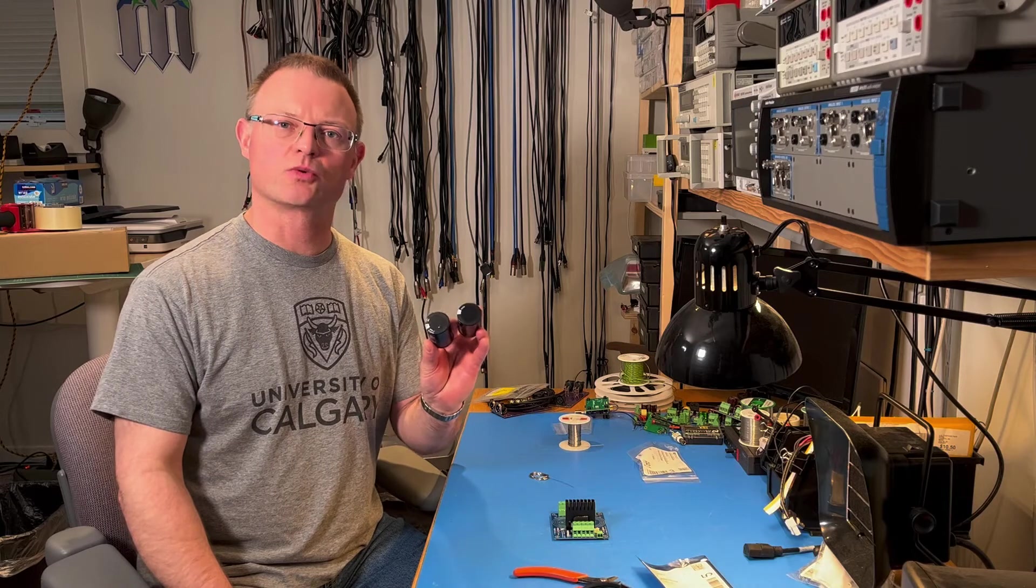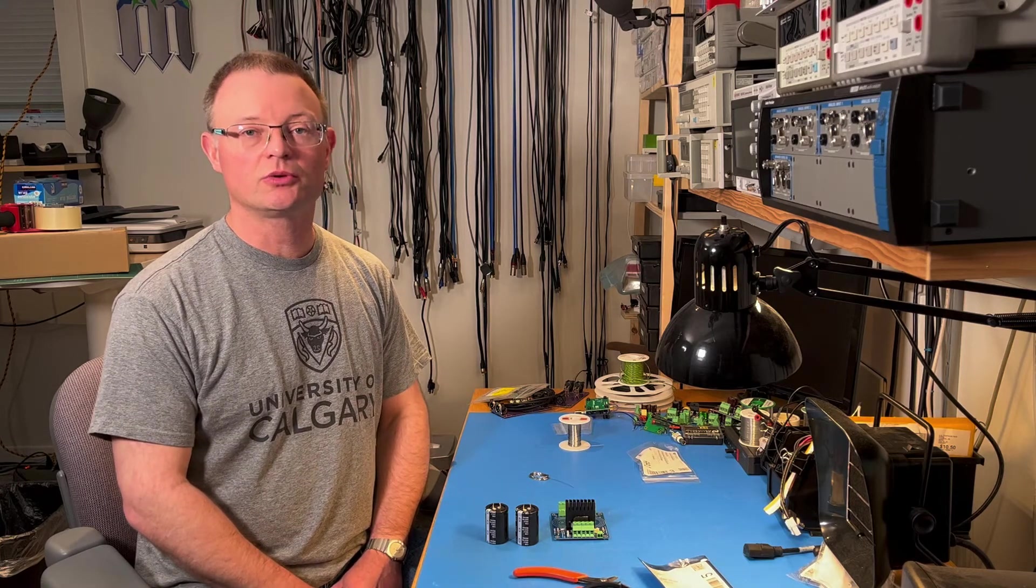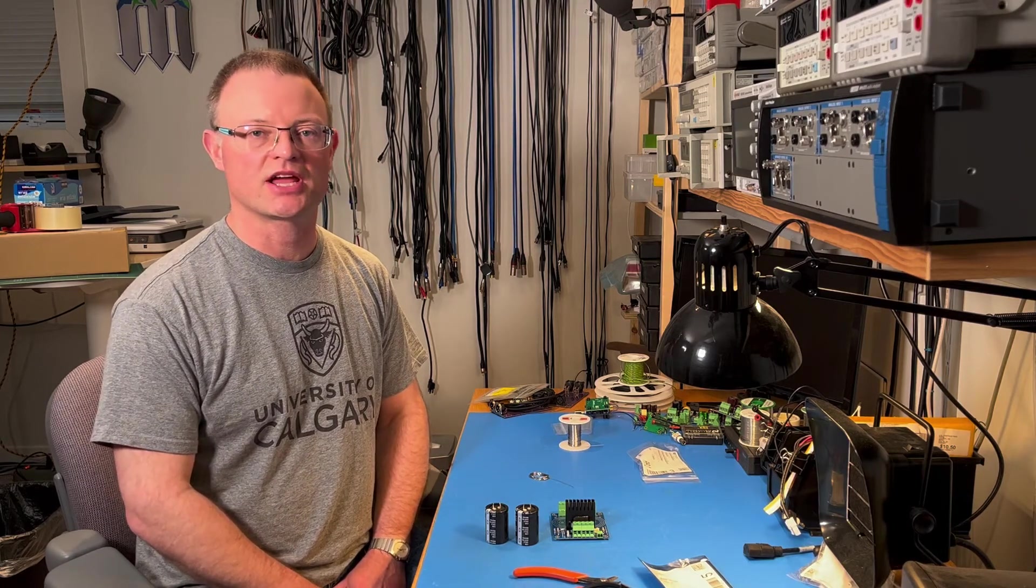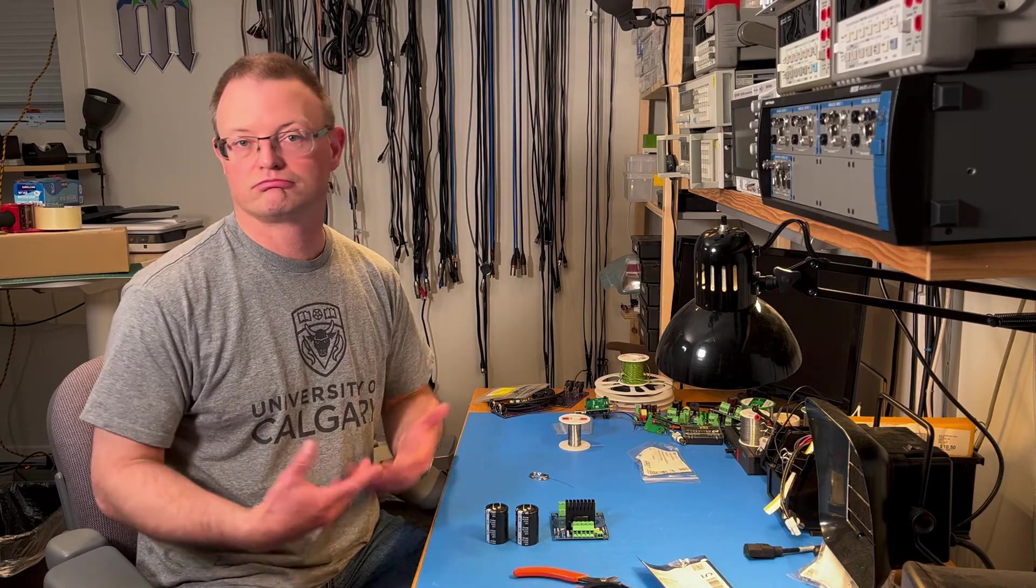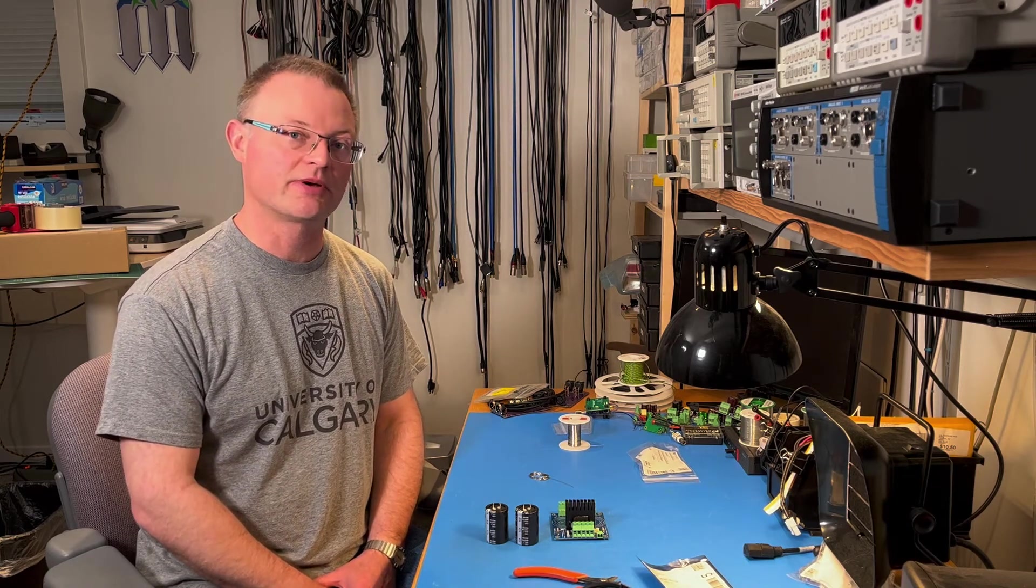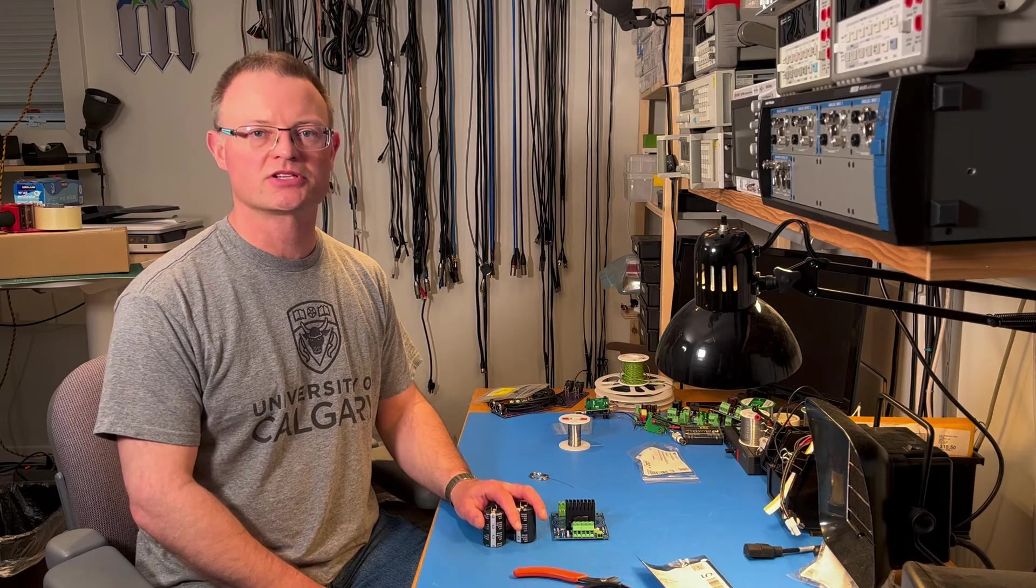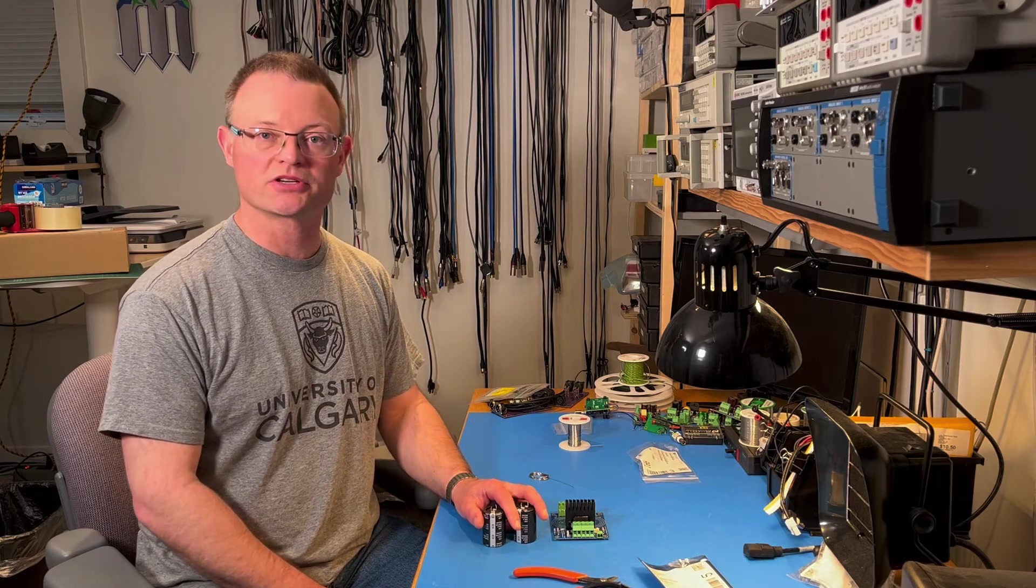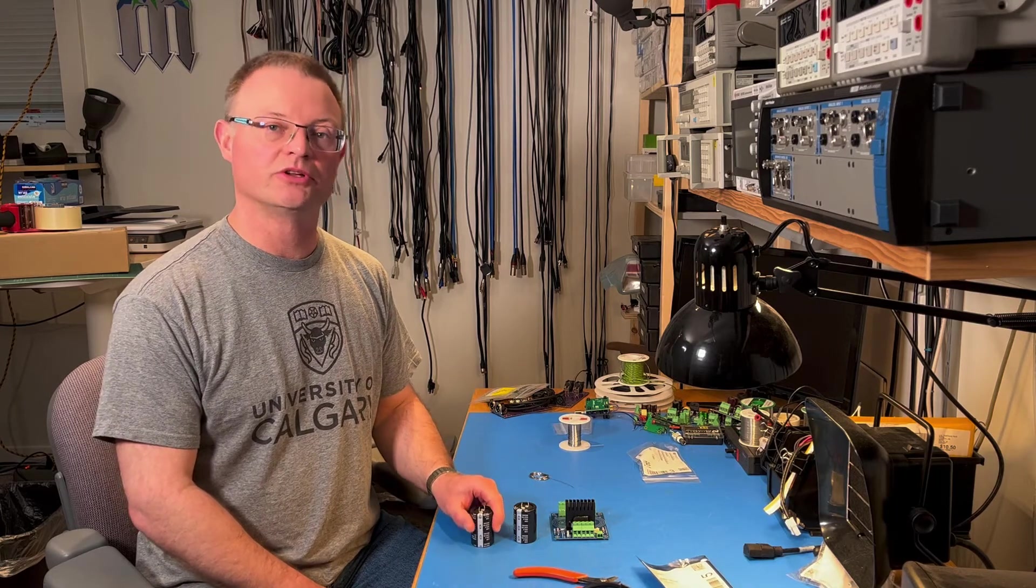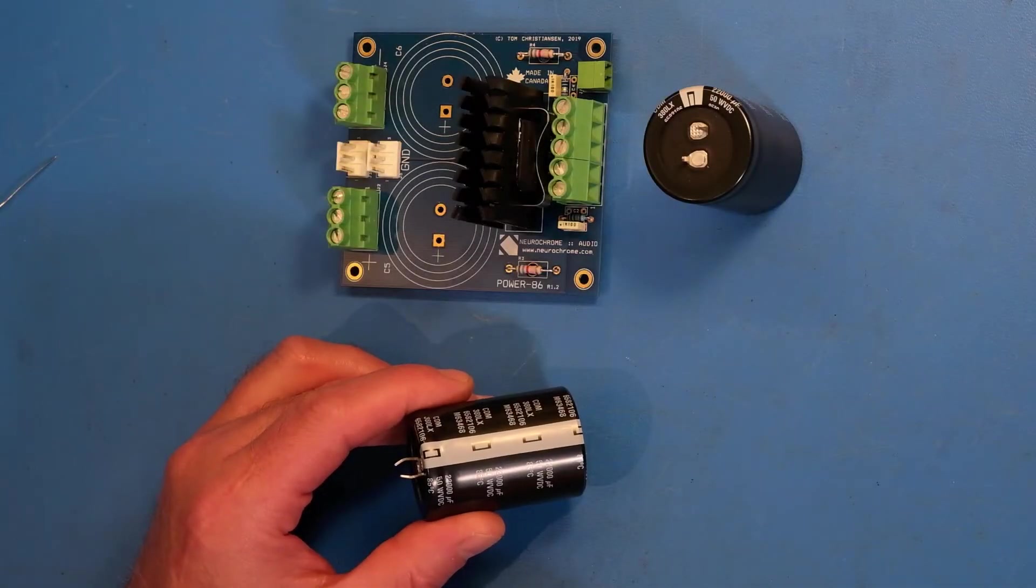Next up are the two reservoir capacitors. These have been selected for use with the modulus 86 and modulus 186. They're equally useful with the LM3886 done right and other LM3886 based amplifiers. You can also use this board with any other amplifier that you might have that requires a bipolar supply. In that case you might need different capacitors and in that case you can choose any snap-in type capacitor with 10 millimeter pin spacing and a specified diameter of up to 40 millimeters. These are 22,000 microfarads 50 volts and 35 millimeters in diameter. So you'll notice there's going to be a little bit of space between them once they're mounted on the board.